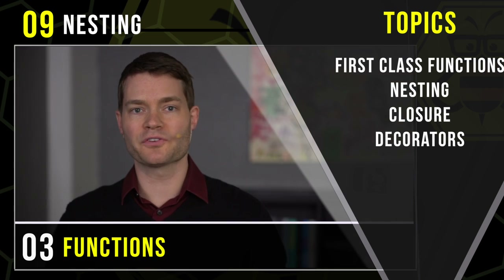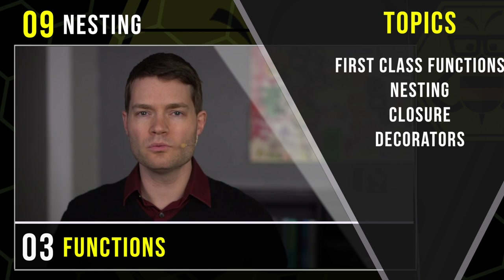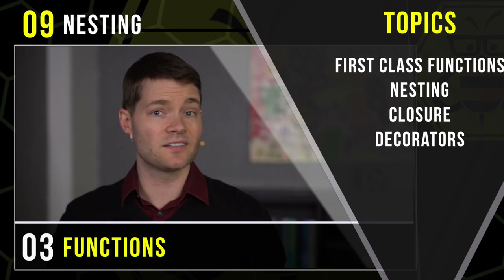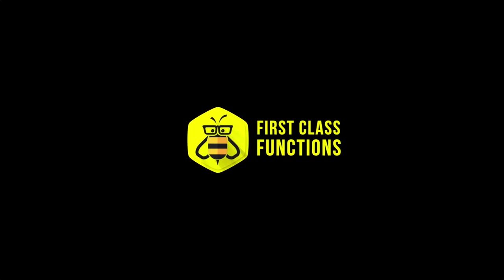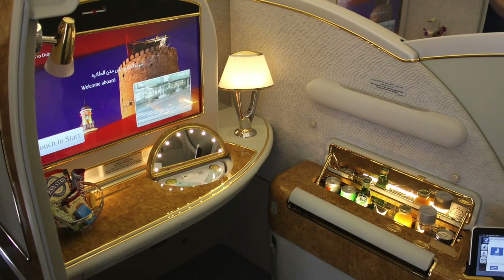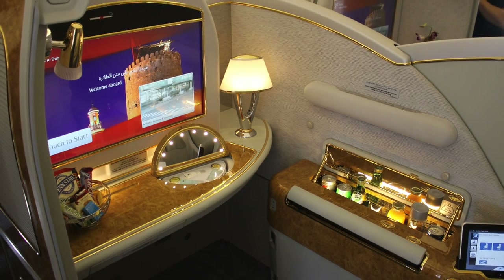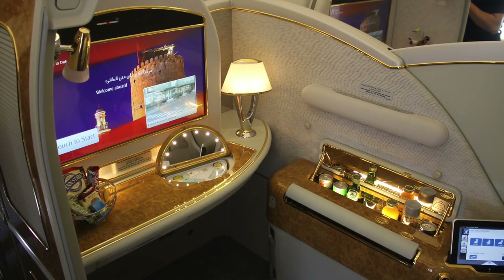So remember, the average freight train is about one to one and a quarter miles long — that's 90 to 120 railcars. Now our first mnemonic is going to be a first class seat on a luxury airplane, and this represents the topic of a first class function.